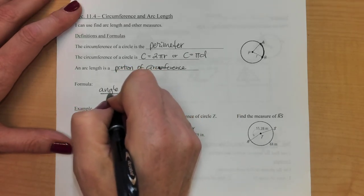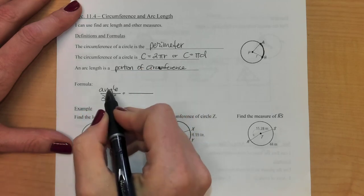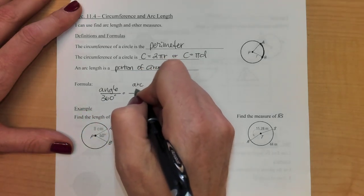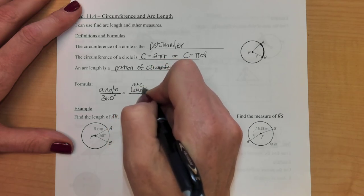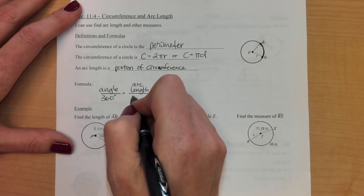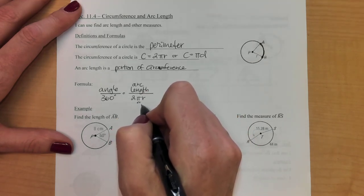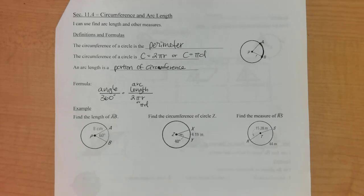So we'll do the angle over 360. So this is kind of like part of the whole circle. And then our arc length, which is our part, will be over our whole circle which is 2πr. Or again you can use π diameter, whichever formula you'd like to use for circumference.